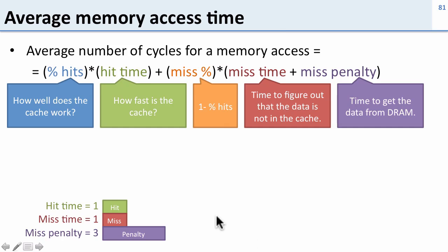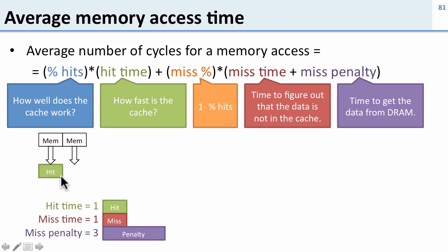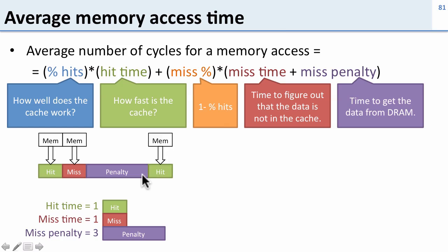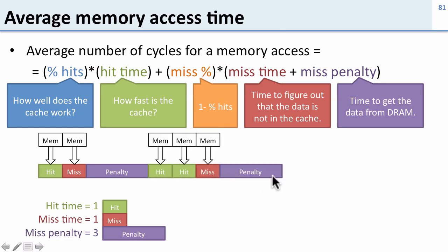Let's look at an example. We have a hit time of one cycle, a miss time of one cycle, and a miss penalty of three cycles. We execute some instructions: a memory access that's a hit, then a miss — we pay the miss time and then the miss penalty to go to DRAM. Then another hit, another hit, another miss, and we pay the miss time and the miss penalty again.